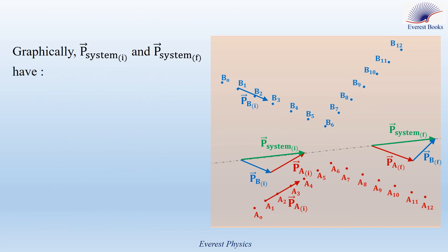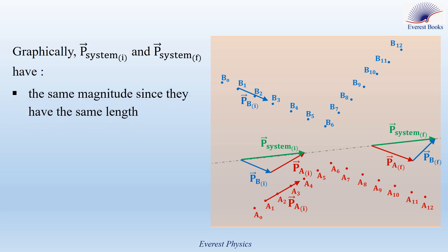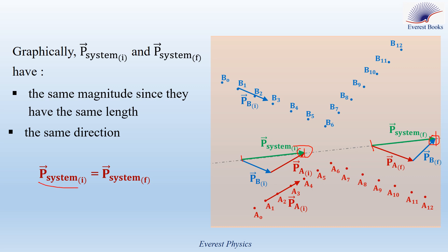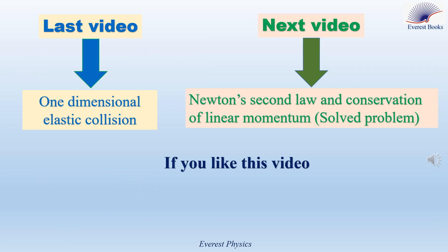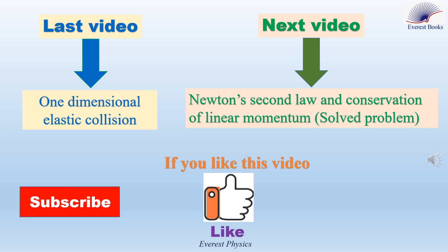After drawing P system before collision and P system after collision, we can notice that graphically these two linear momenta have the same magnitude since they have the same length, and also they have the same direction. Therefore P system before collision equals P system after collision, and the principle of conservation of linear momentum is verified. Thank you for watching. If you like this video, subscribe to the channel and hit the like button.